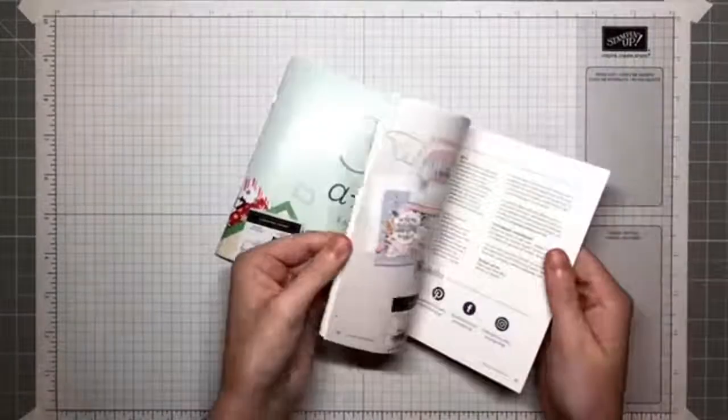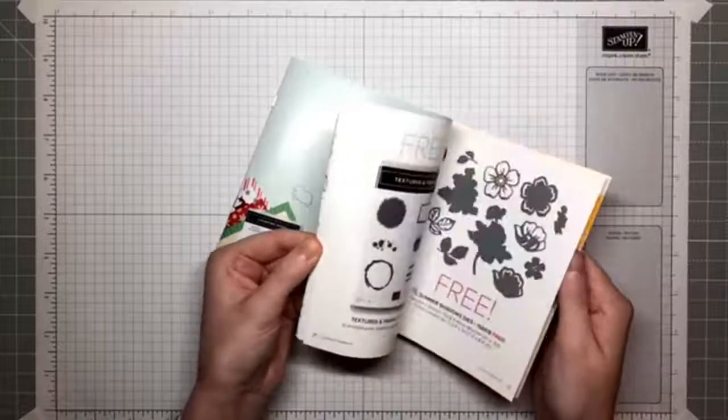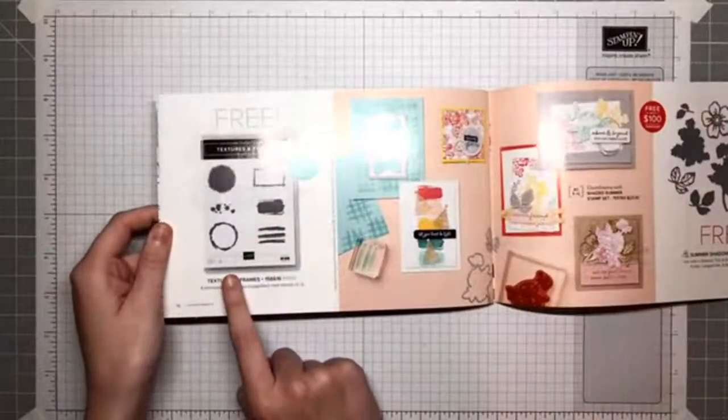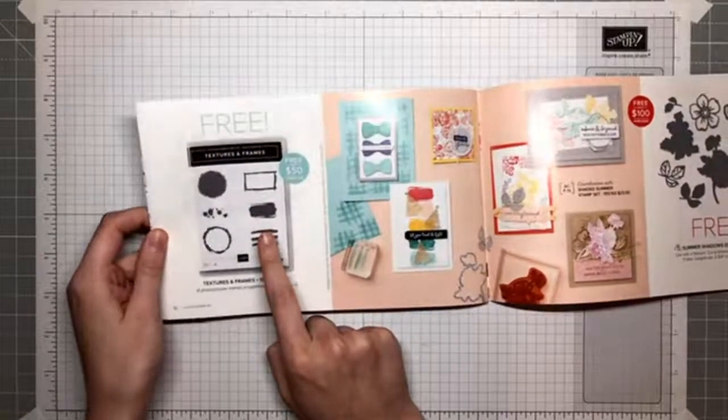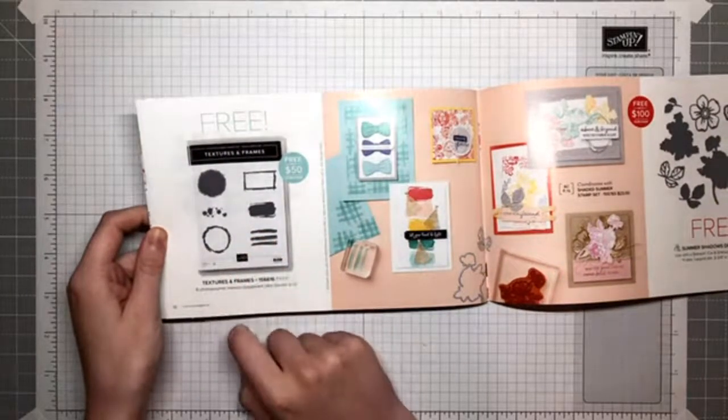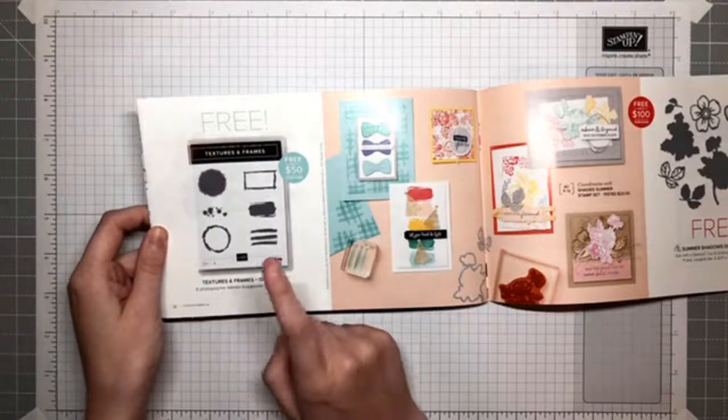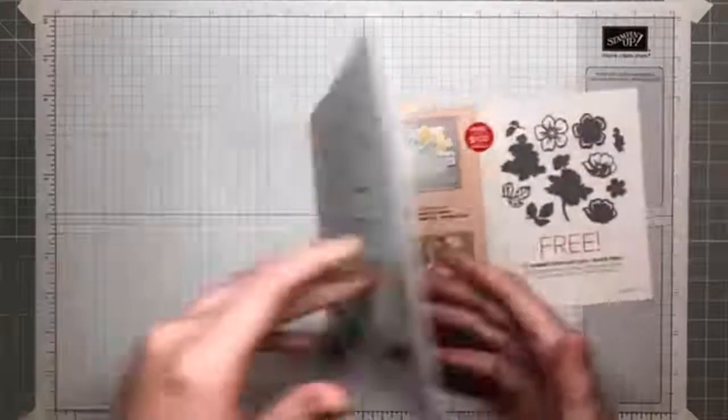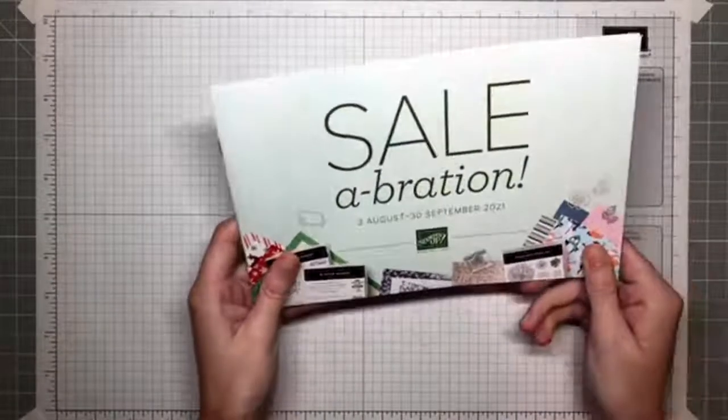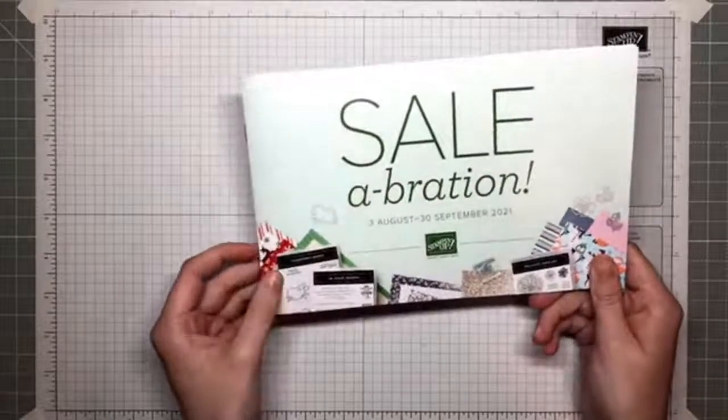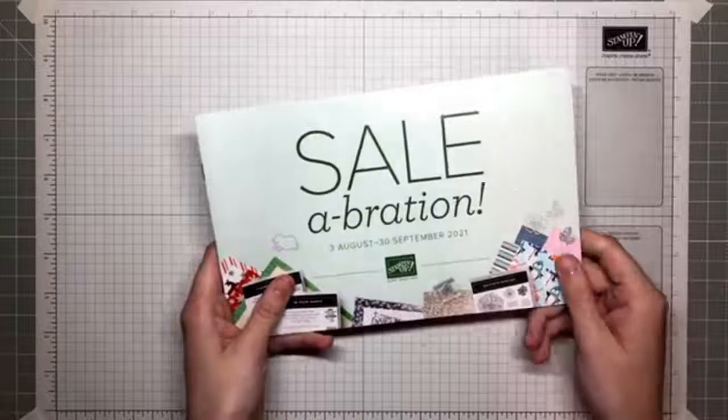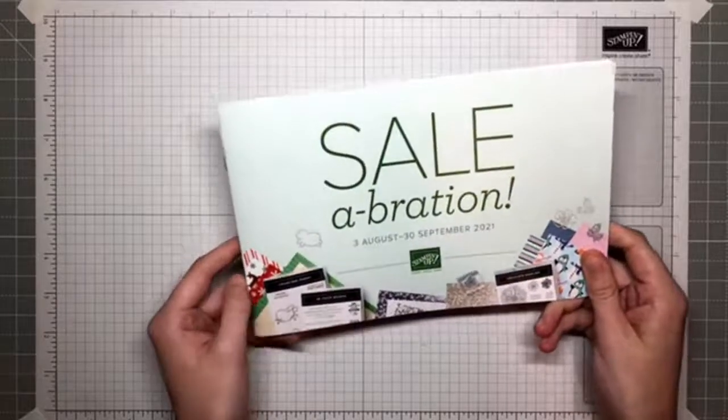All right. So let me close this up and then I'm going to bring in my celebration brochure and show you that we are also going to be using this stamp set right here called textures and frames. Now this is something you can earn for free with a $50 order in my online store. And that goes through September 30th. So pretty awesome. About two months of this awesome celebration brochure. And this is the freebie brochure. Yes, Alicia said so fun.